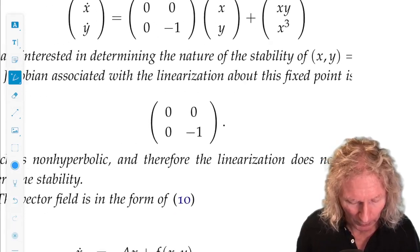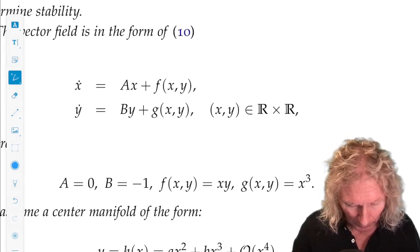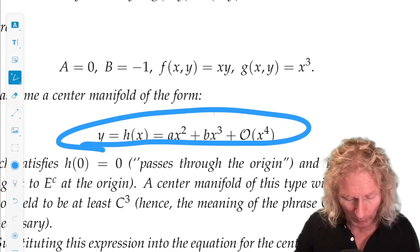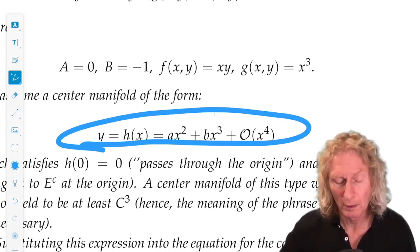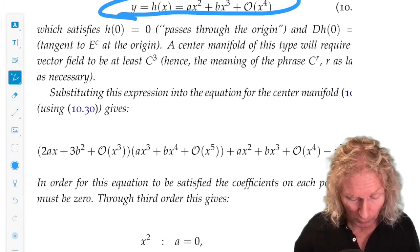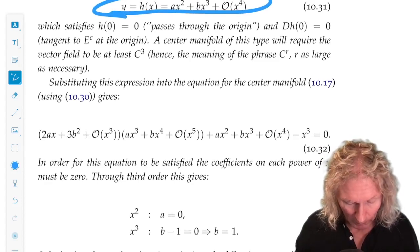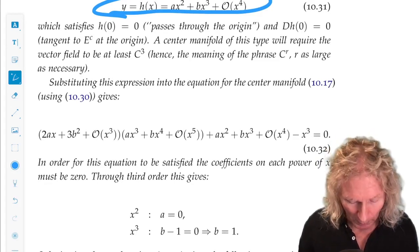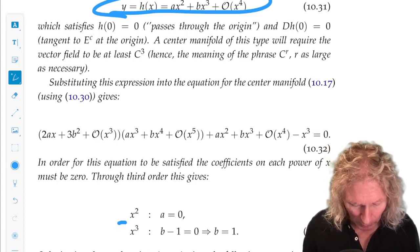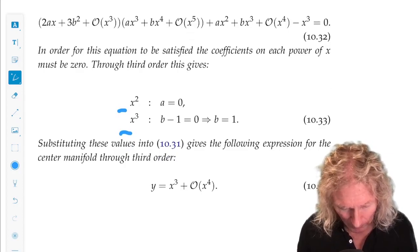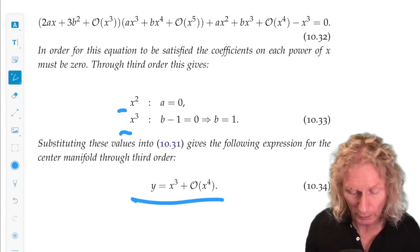One-dimensional center manifold, one-dimensional stable manifold. We assume a center manifold having this power series expansion, no constant, no linear terms, for the reasons I just said. We plug it into this equation. We set the coefficients of the quadratic and cubic terms equal to zero. Now, we only have cubic terms.